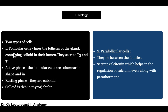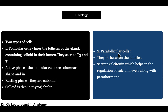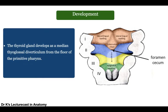Parafollicular cells are C cells — C cells secrete calcitonin, which helps regulate calcium levels along with parathormone. So remember two types of cells: follicular cells and parafollicular cells. There is a colloid rich in thyroglobulin; in the active phase the cells are tall and columnar, and in the resting phase they are cuboidal.